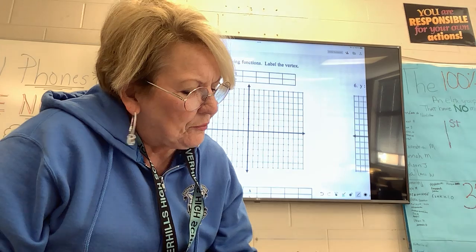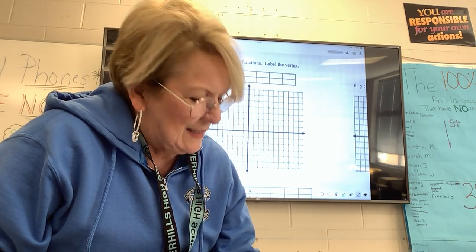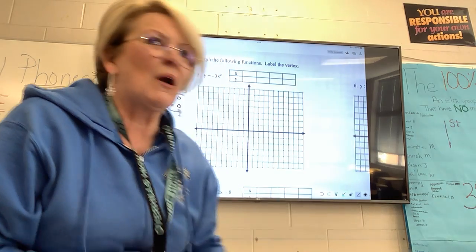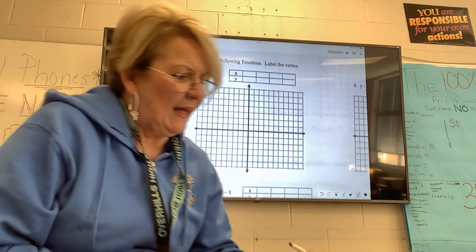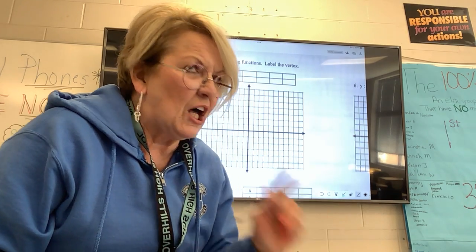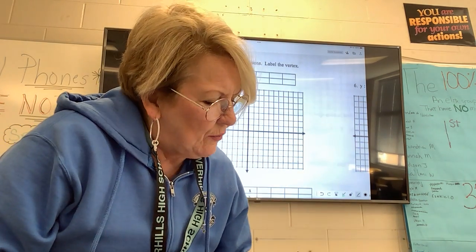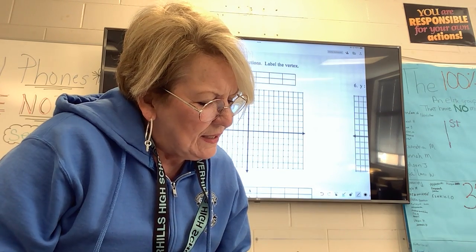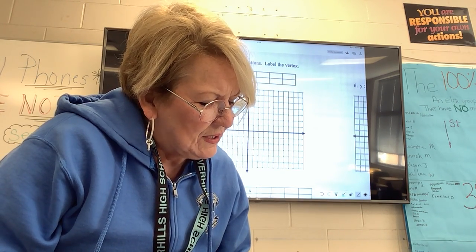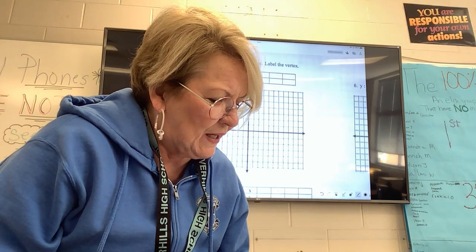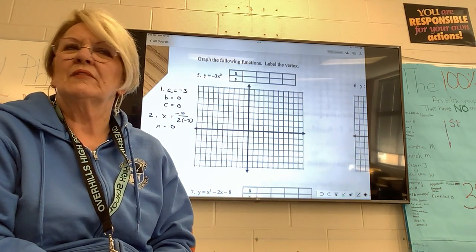Number one: identify A, B, and C. A equals negative 3. B equals zero. C equals zero. Number two: use the AOS formula. X equals negative B over 2 times A. Negative zero is zero, so X equals zero over 2 times negative 3. X equals zero. That is my AOS.